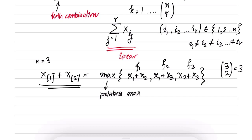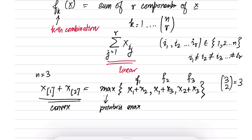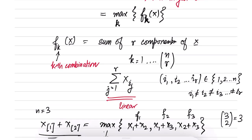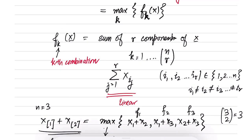Hence this function is convex. The key insight is that sometimes it is possible to express a function as a pointwise maximum in very interesting ways — here by using linear combinations of r components of x. This idea is also applicable when taking pointwise maximum over not just a finite index set but over an uncountable set.